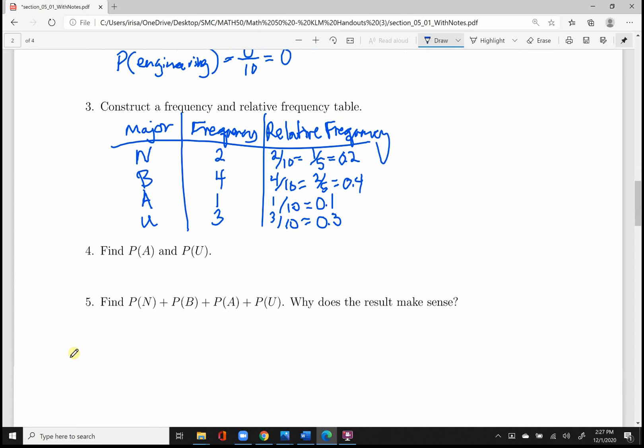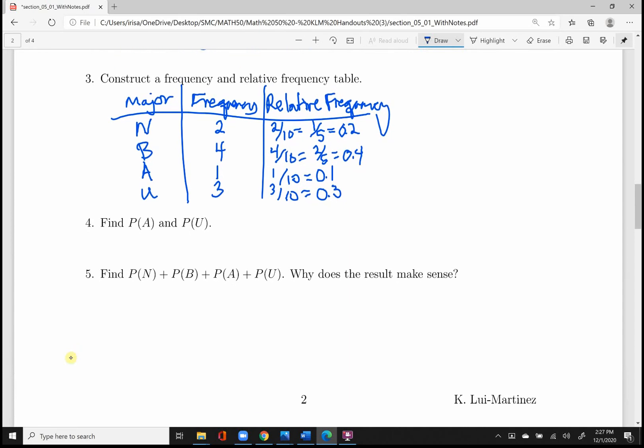So next we will be asked to find P of A, which is basically the relative frequency. It was one out of ten, which is 0.1. And then P of U, P-U, LOL, probability of being undecided. Now there were three undecideds out of ten students, and that's a decimal of 0.3.